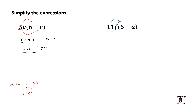So 11f is being distributed to 6 and is also being distributed to minus a. We already went through all of the steps in the first example. So in our first term, we multiply 6 times 11, which equals 66, returning our variable f. Then that will be minus — everything here is unlike terms — so 11f times minus a will equal negative 11fa. We put our f back and our a, and this will be our expression in its simplified form.